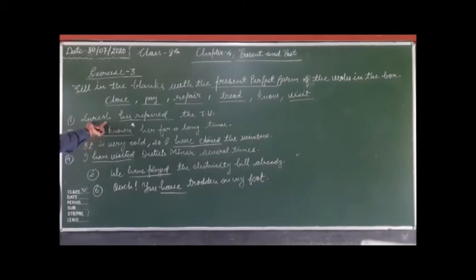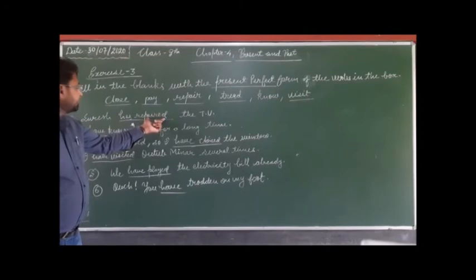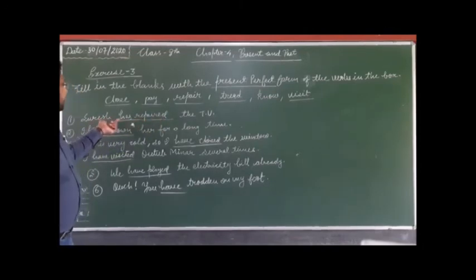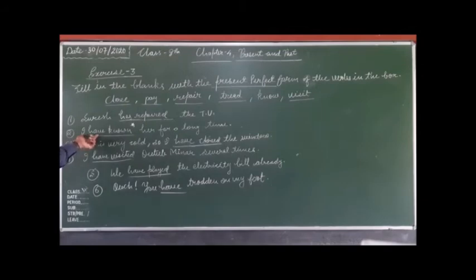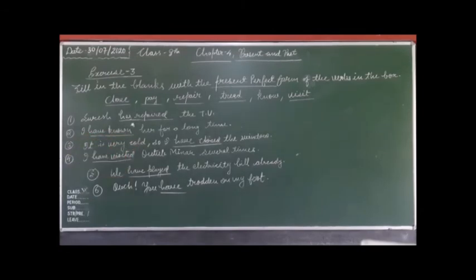For sentence one, the subject is third person singular, so we use 'has' and the third form of 'repair' is 'repaired'. The sentence will be: she has repaired the TV. In sentence two, 'I have known her for a long time' — with 'I' we apply 'have', and the third form of 'know' is 'known'.